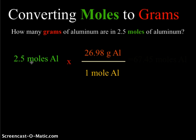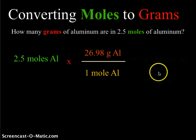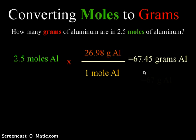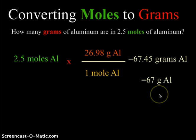We do 2.5 times 26.98 and divide by 1, which gives us 67.45 grams of aluminum. However, we are dealing with only two significant digits from the question — 2.5 moles of aluminum — so our final answer is actually 67 grams of aluminum. These are two basic examples of how to convert grams to moles and moles to grams.